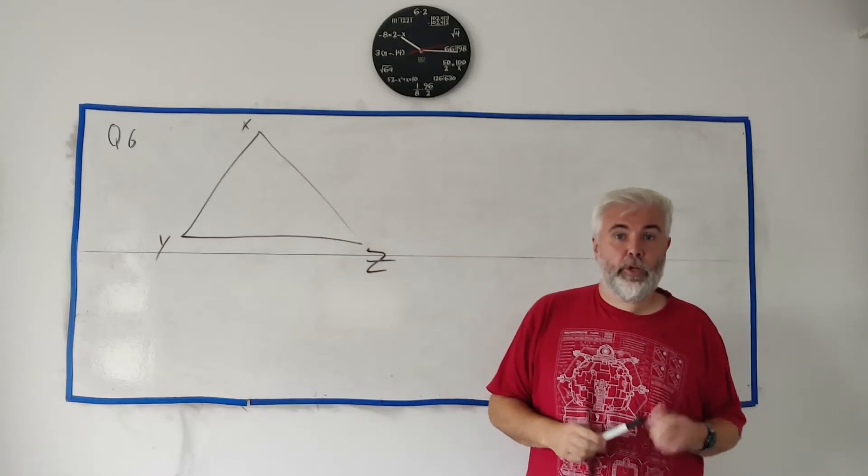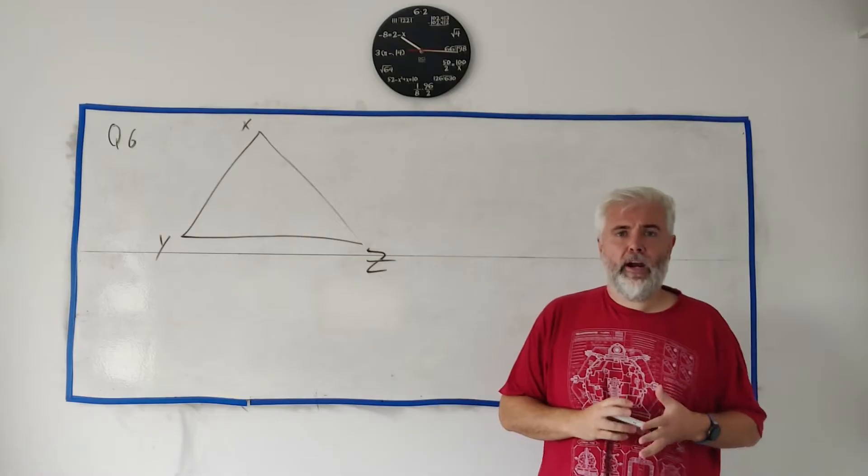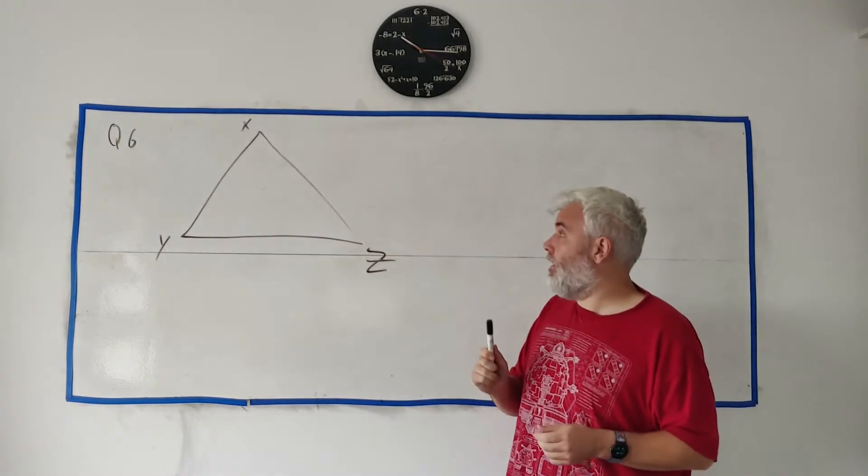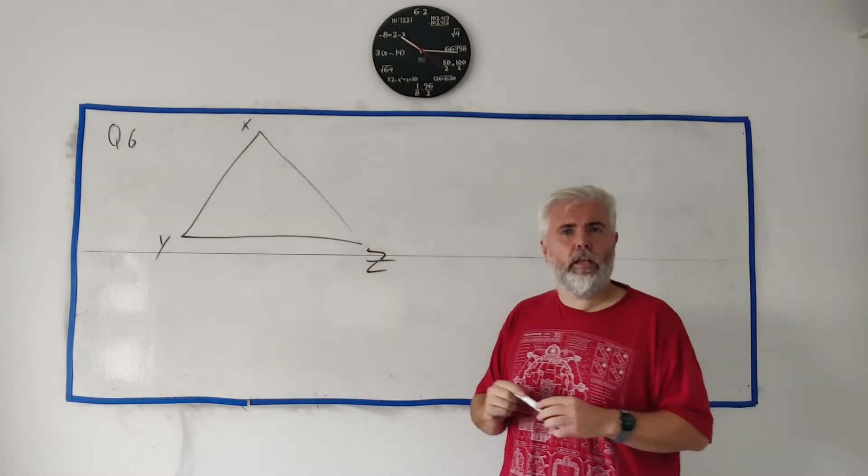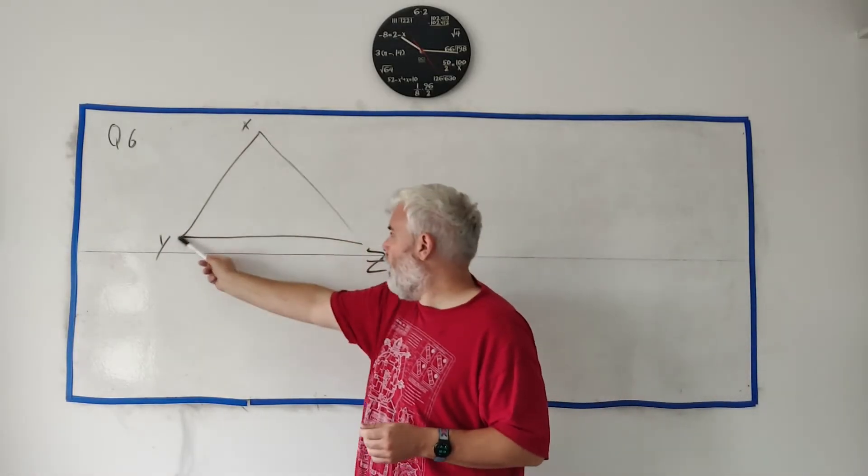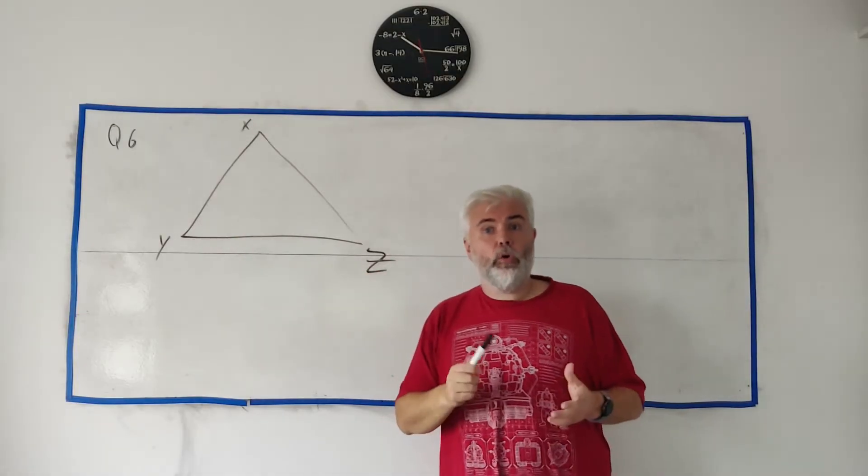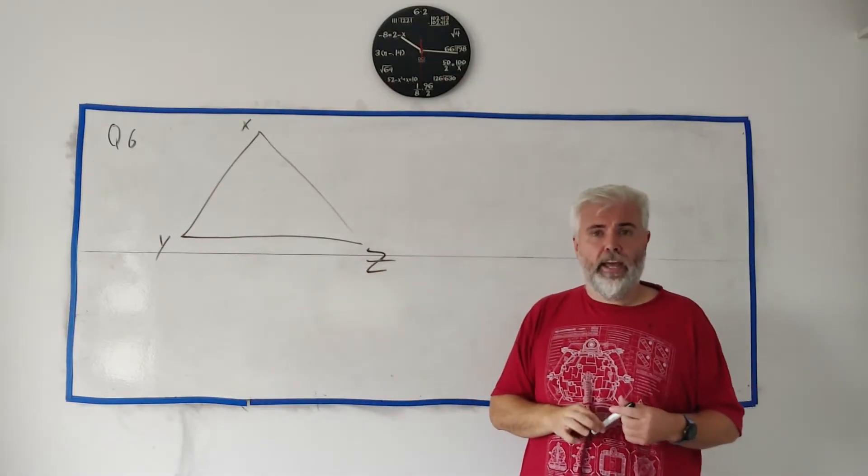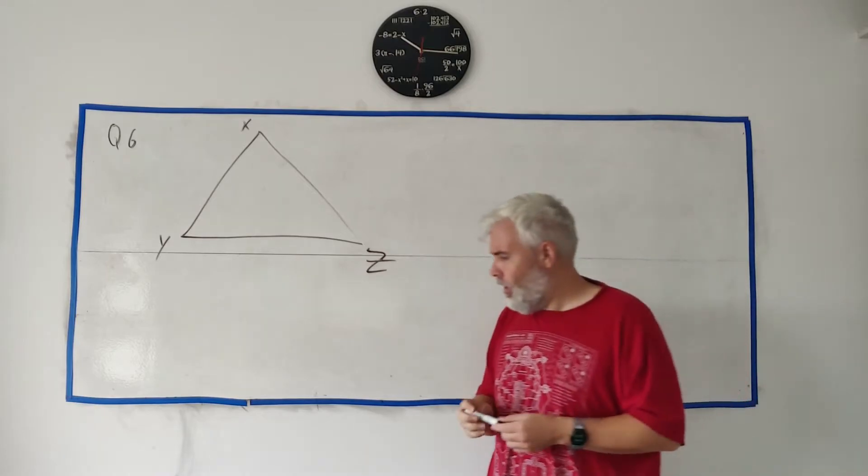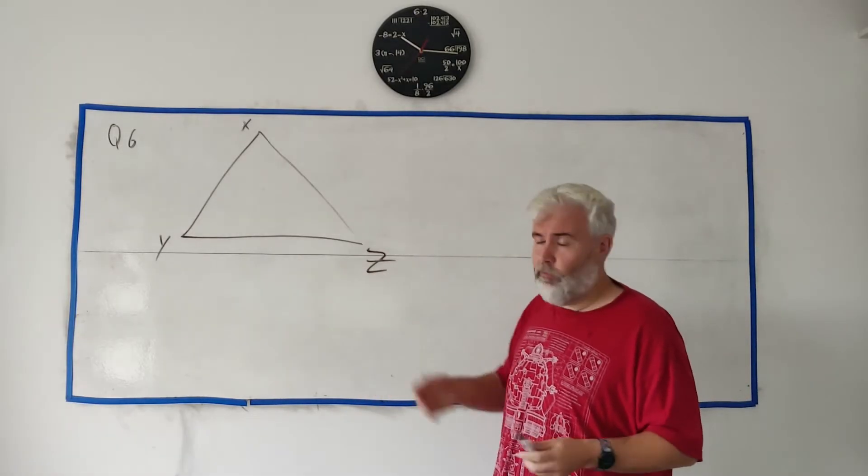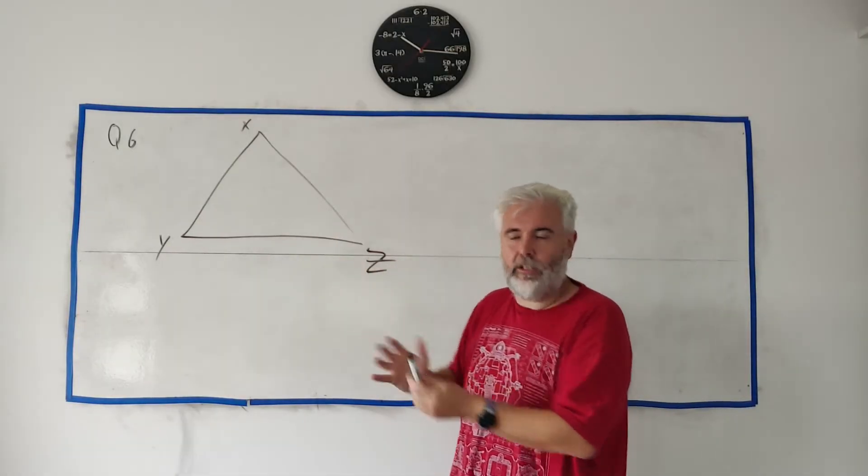Question 6 seems to be all about triangles. In Part A they asked us about construction and they asked us to construct a bisector of the angle XYZ, so this angle in here, using only a compass and a straight edge. Now I don't have a compass so I'll show you roughly how it should be done, my answer won't be exact though.